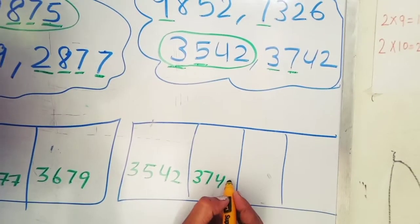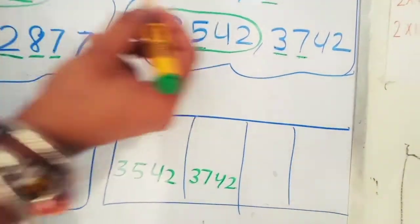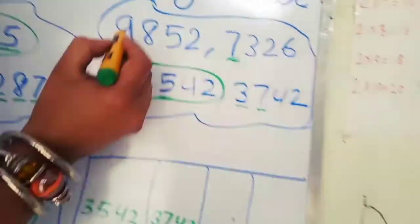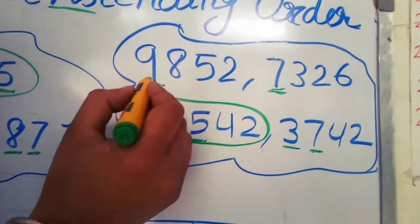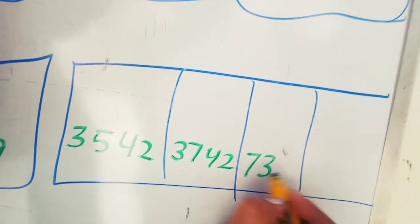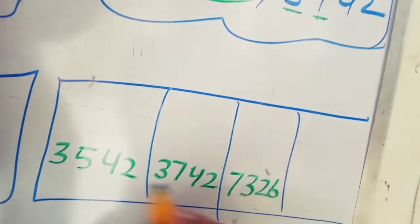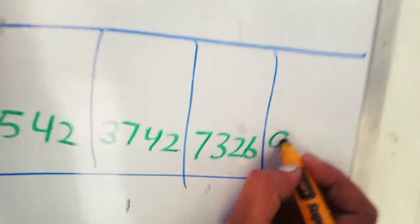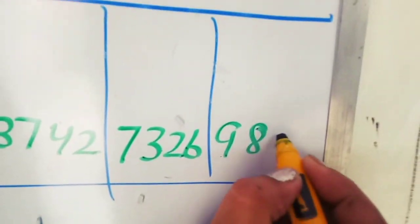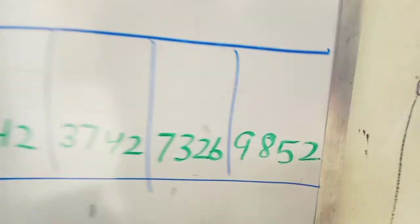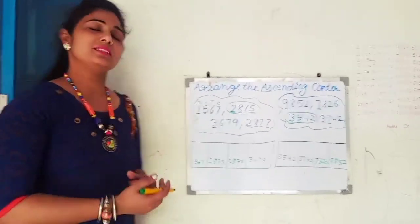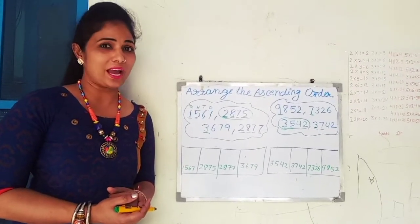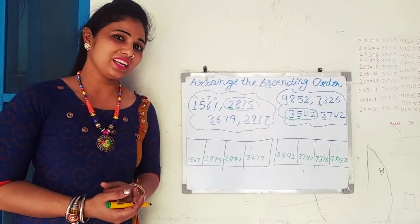Now check seven and nine — smallest number is seven, biggest is nine. So write down seven thousand three hundred twenty-six, and last is nine thousand eight hundred fifty-two. I hope children you understand the four-digit ascending order. If you like my video, please like, share, and subscribe to my channel.